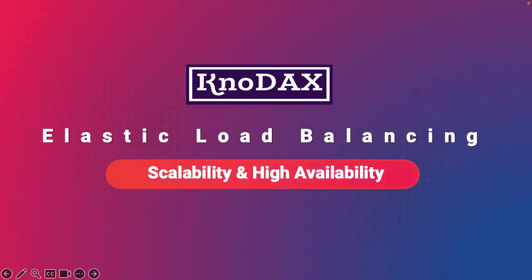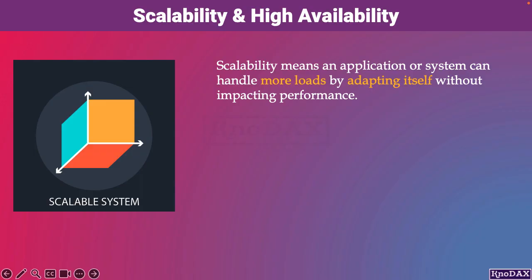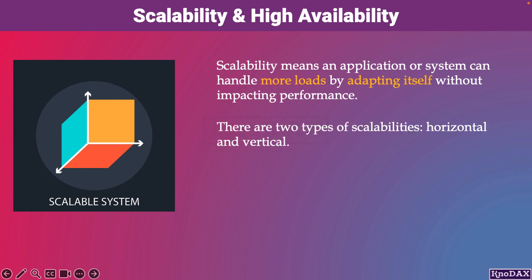This video is about scalability and availability, one of the most important foundational topics, particularly for cloud engineers. Scalability means an application or system can handle more loads by adapting itself without impacting performance. There are two types of scalability: horizontal and vertical.